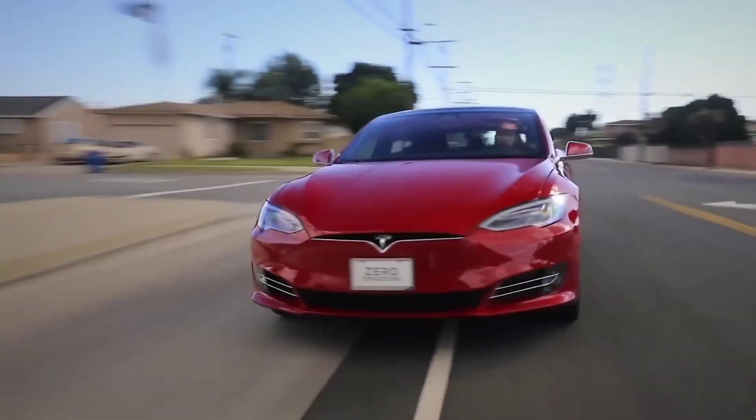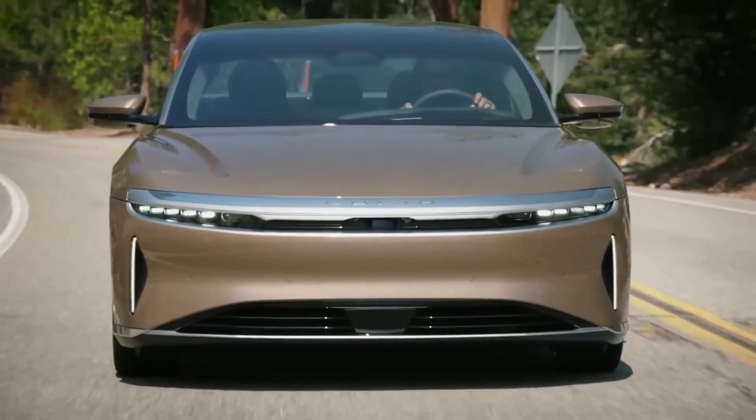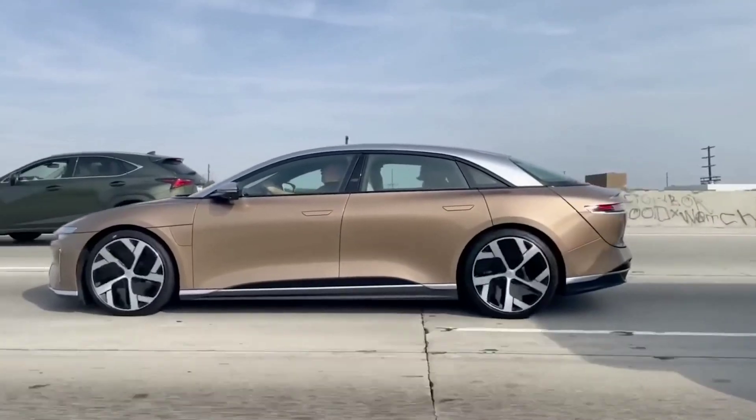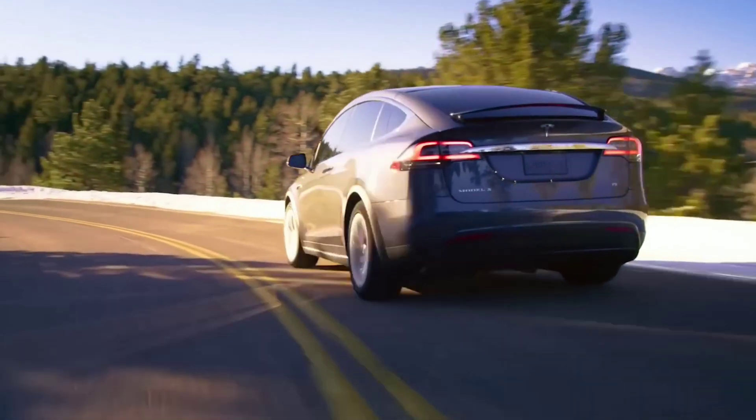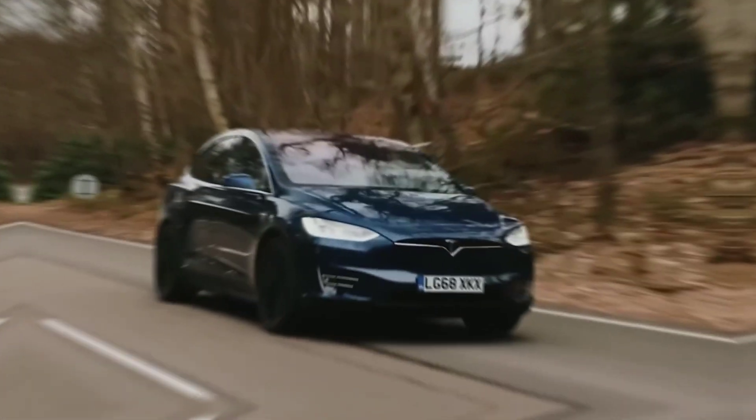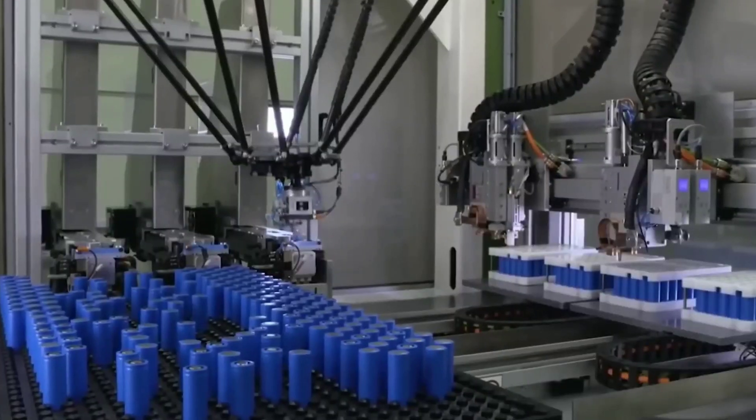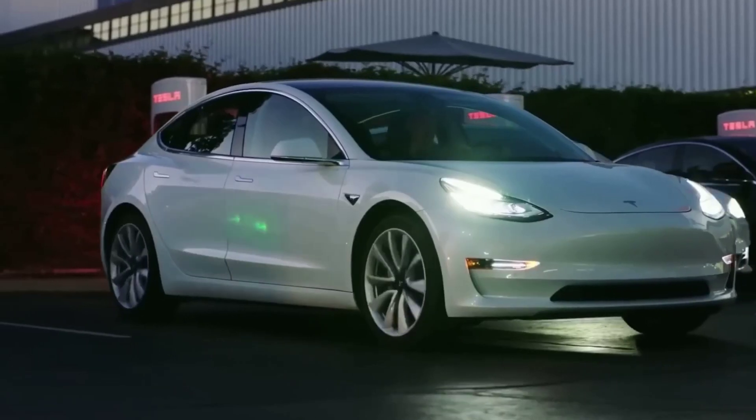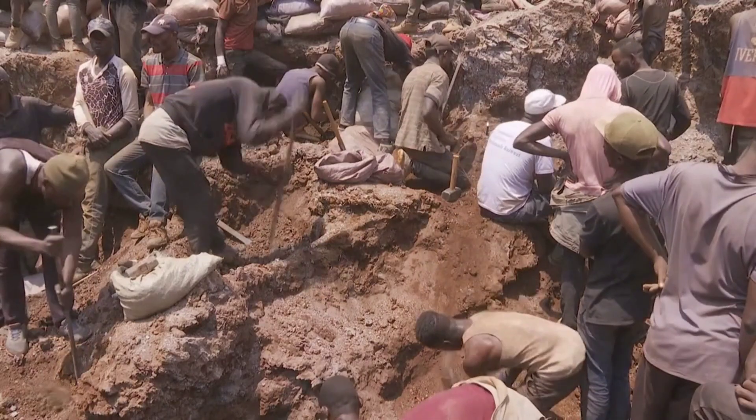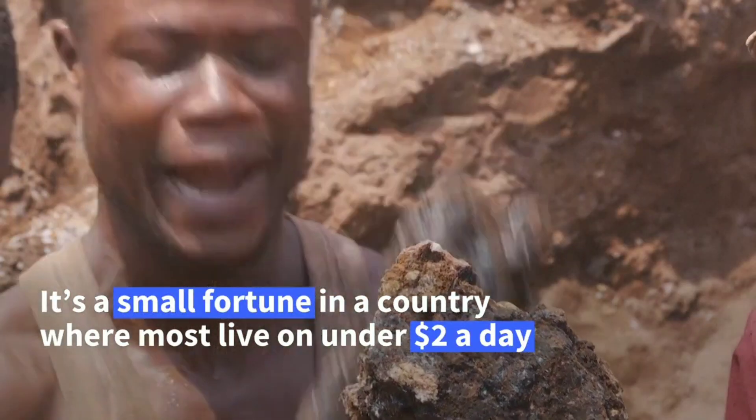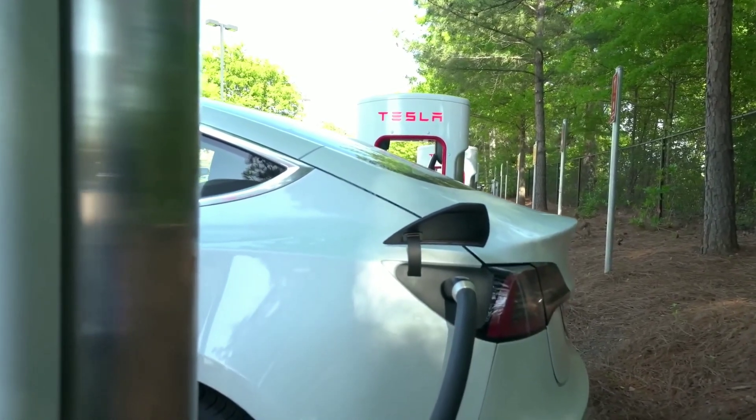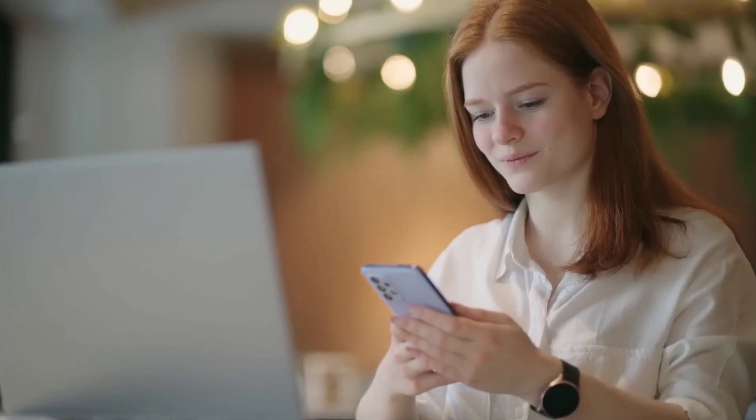But before we dive into the details, let me ask you a question. What is the biggest challenge that EVs face today? Is it the cost, the range, the charging time, or the environmental impact? Well, the answer is all of the above. EVs are still more expensive than conventional cars. They have limited range and need frequent charging, and they rely on scarce and harmful materials like cobalt and nickel that are mined in unethical and unsustainable ways. These are all serious problems that limit the adoption and acceptance of EVs by consumers and governments alike. And these problems are largely caused by one thing, the battery.